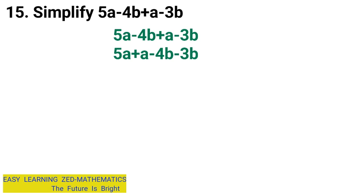Now once I've done that, I'm going to find the value of these expressions. 5a plus a will give me 6a. Then negative 4b minus 3b will give me negative 7b.